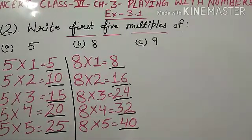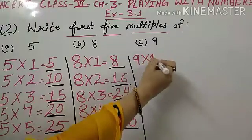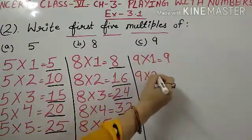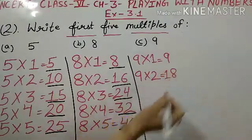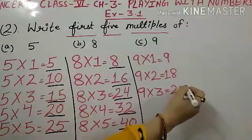Now C part, C part is first 5 multiples of 9. 9 multiplied by 1, so 9 ones are 9. 9 multiplied by 2, 9 twos are 18. 9 multiplied by 3, 27.